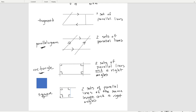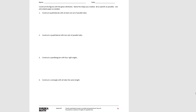And all four of these are considered quadrilaterals. Let's use this to solve some problems in our problem sets. So the first one says: construct a figure with the given attributes, name the shape you created, be as specific as possible, and use extra paper as needed. So stop the video and try number one.